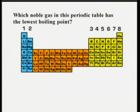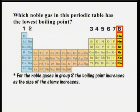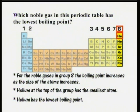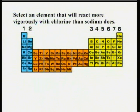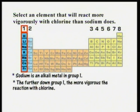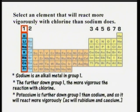Which noble gas in this periodic table has the lowest boiling point? For the noble gases in group 8, the boiling point increases as the size of the atoms increases. Helium, at the top of the group, has the smallest atom with one shell and two electrons, so helium must have the lowest boiling point. Finally, select an element that will react more vigorously at room temperature with chlorine than sodium does. Sodium is an alkali metal in group 1; the further an element is down group 1, the more vigorous its reaction with chlorine. Potassium is further down group 1 than sodium, and so it will react more vigorously, as will rubidium, caesium and so on.